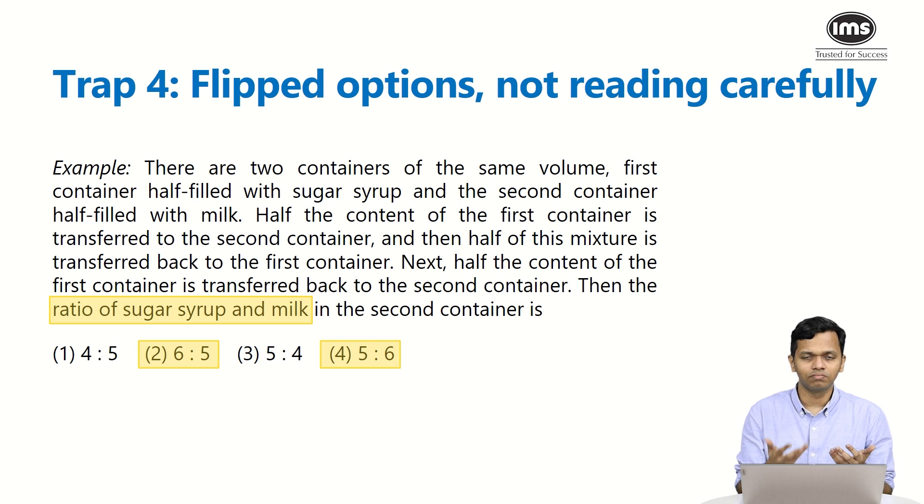Now in a hurry when you're solving it during the test, you might end up calculating it correctly, but you end up marking milk to sugar syrup, or you might end up calculating ratio in the first container. So you have to read the question carefully. And how do you identify the traps? In a lot of these questions you might see the options tend to get flipped. For example, a 6:5 and a 5:6, a 4:5 and a 5:4. It's a classic indication that the examiner who created that particular question expects you to fall into this particular trap. So make sure that you avoid it the next time you see.